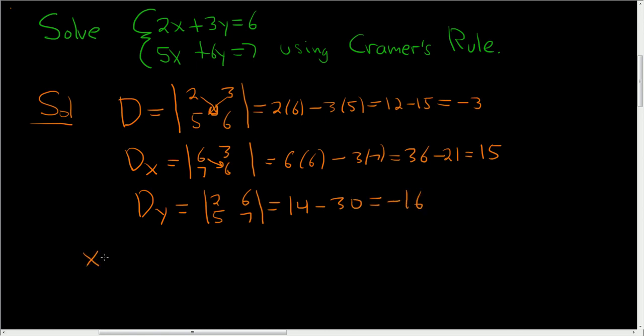The final answer, little x, is big D sub x divided by big D. Now big D sub x is 15. Big D is negative 3. So you get negative 5. So x is negative 5.